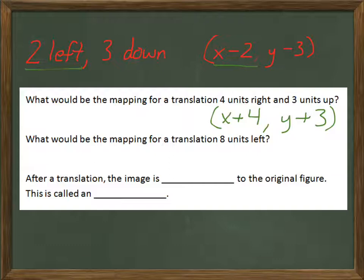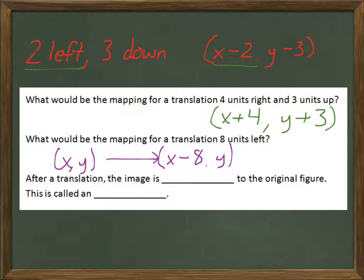Let's look at the next one. What would be the mapping for a translation eight units left? Well, left is negative in the X direction. So that would be X minus eight. I would be taking each X coordinate and subtracting eight. What's happening to Y? Well, nothing. We're not moving it up or down. So that means that that Y coordinate will stay the same.